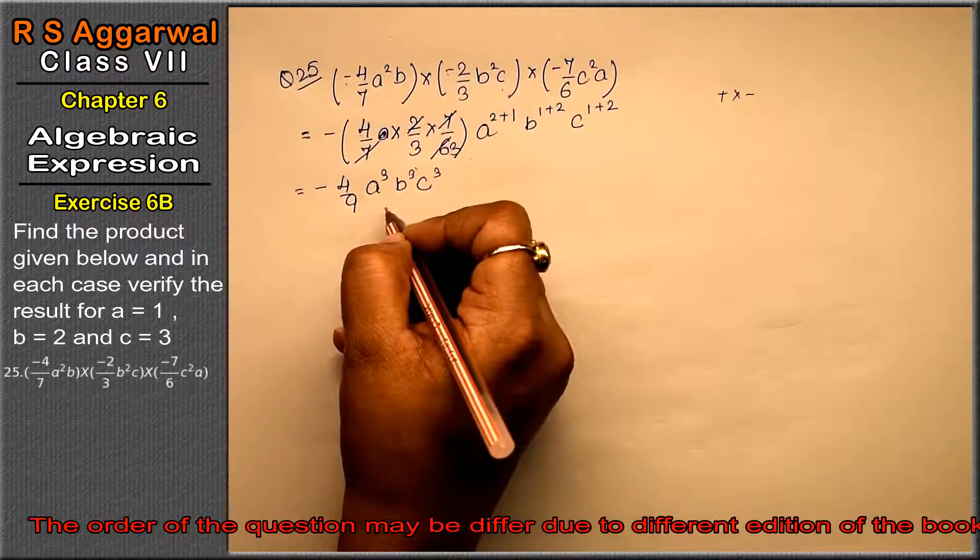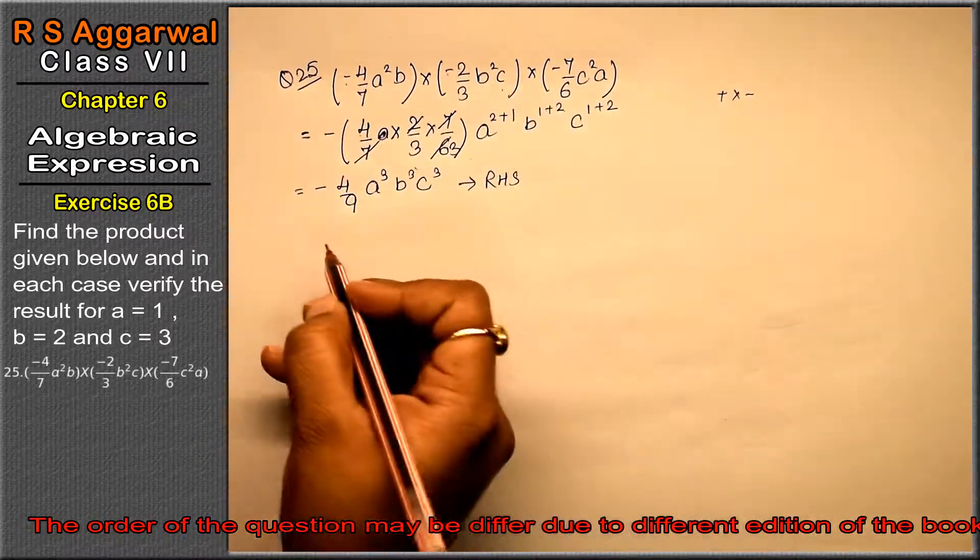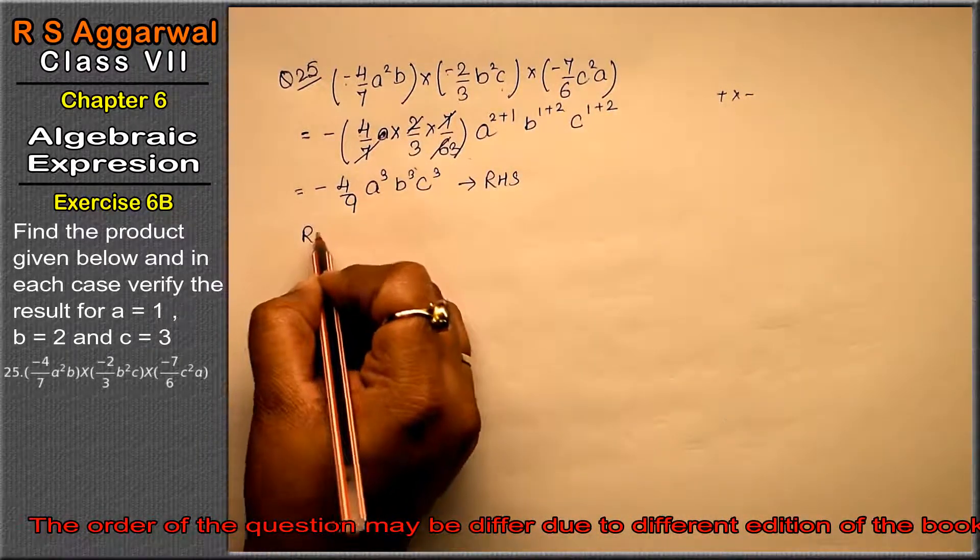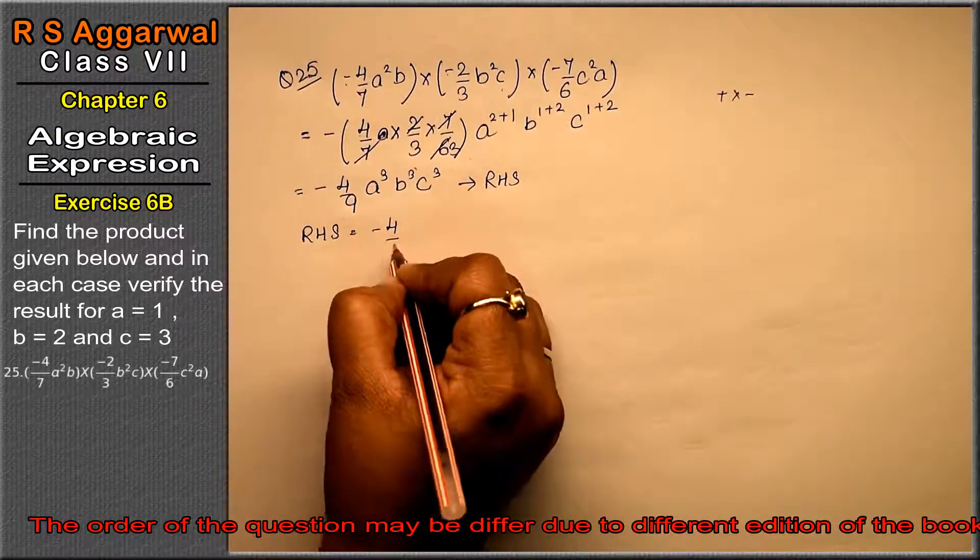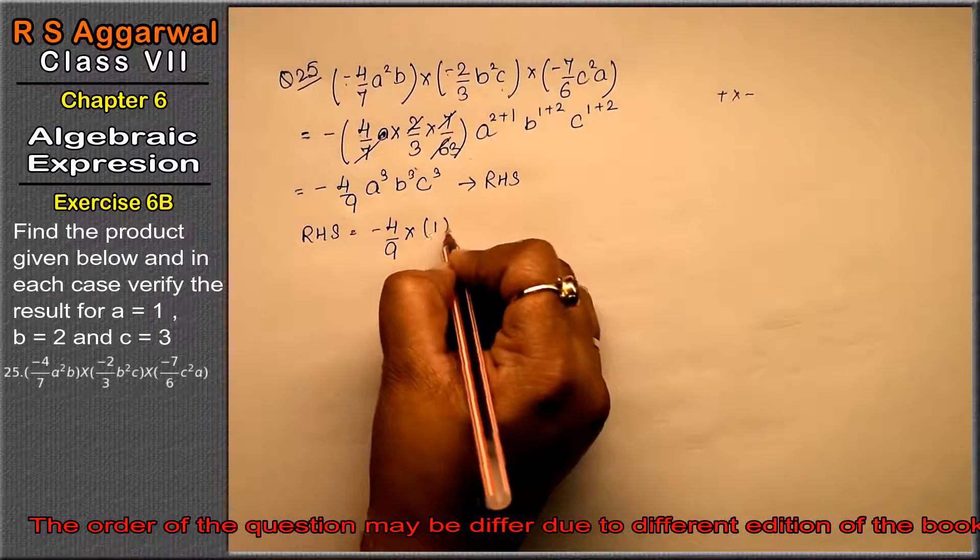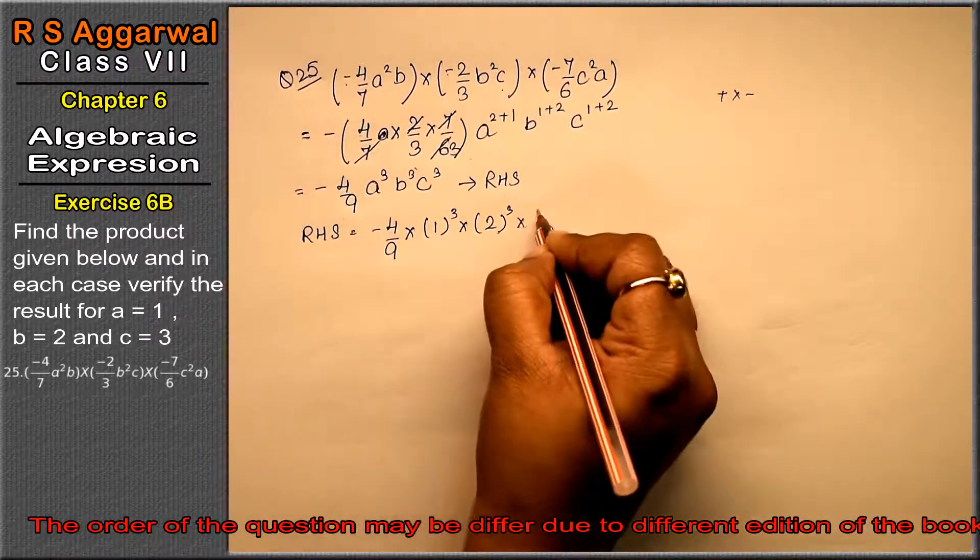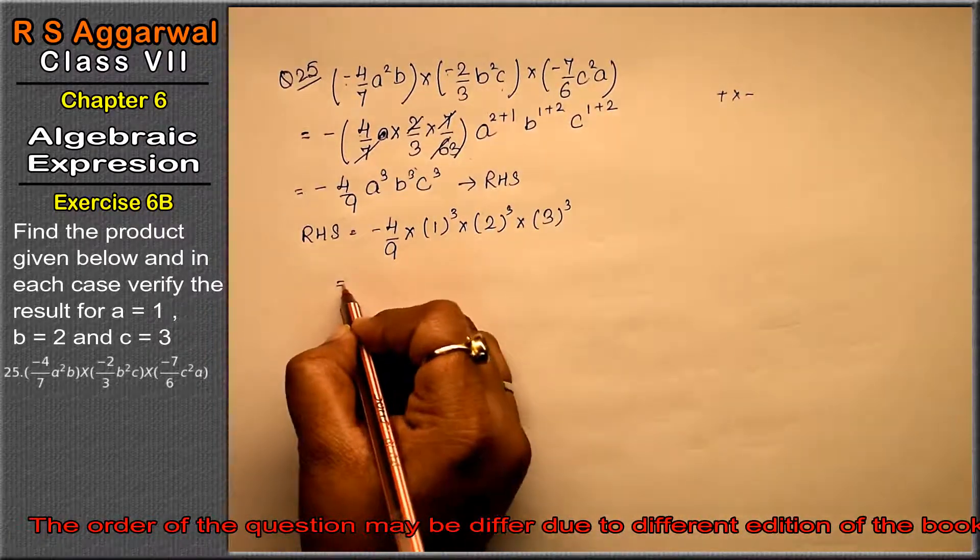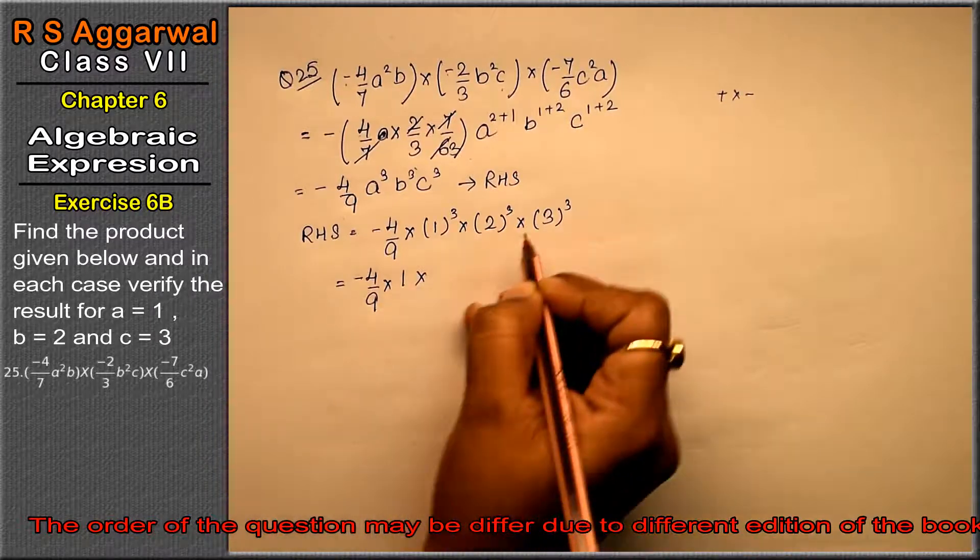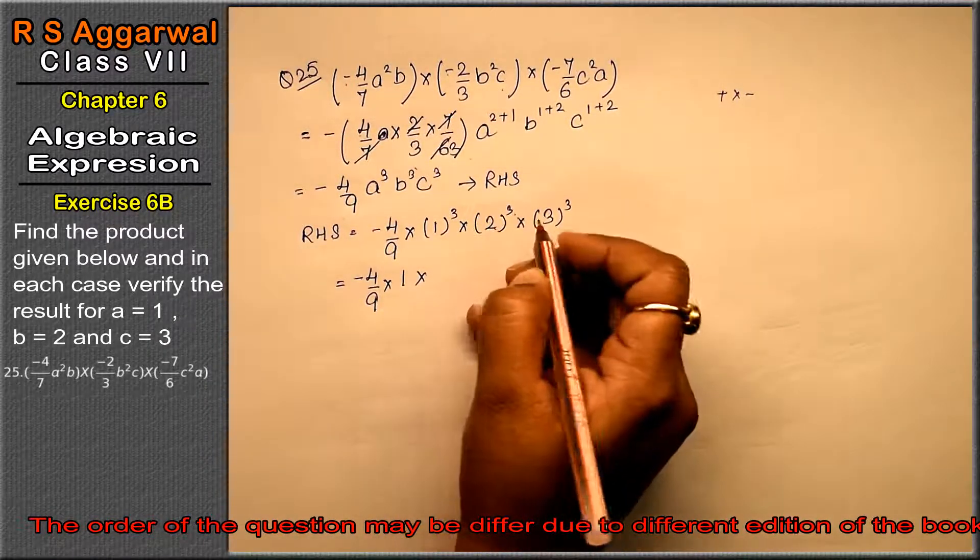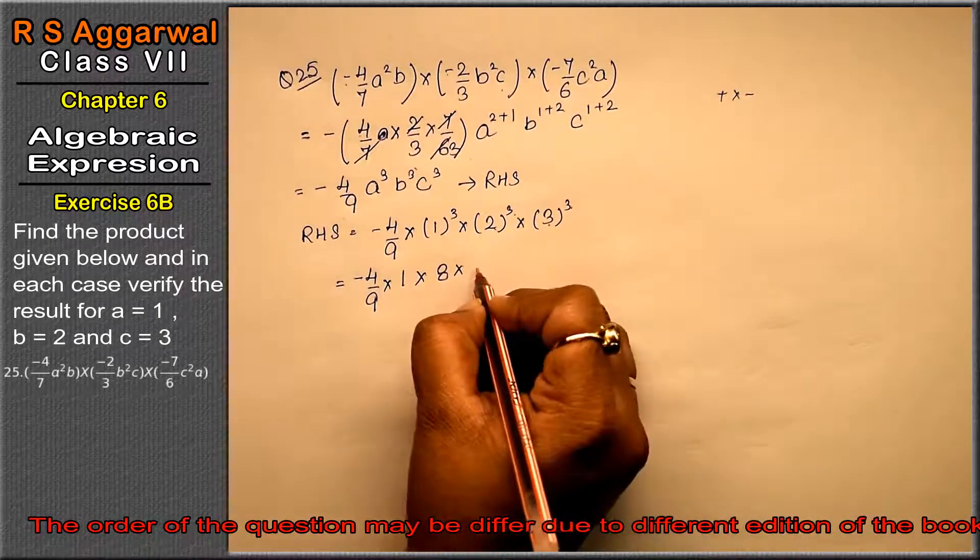Now what will we do? We will keep values in this part. Into 1 to the power 3 into 2 to the power 3 into 3 to the power 3. So, this becomes minus 4 upon 9 into 1, 2 to the power 3 means 2 times 2 is 4, times 2 is 8. 3 to the power 3 means 27.